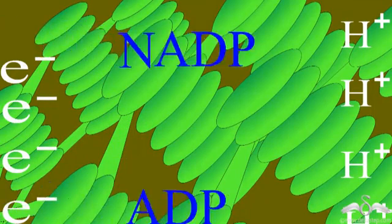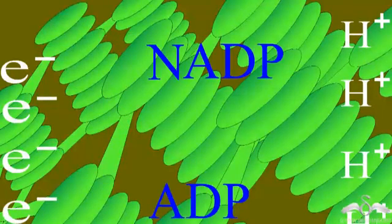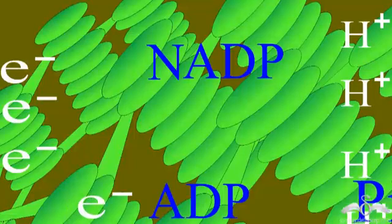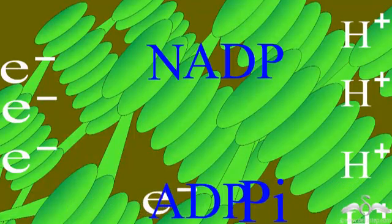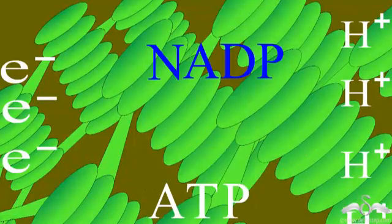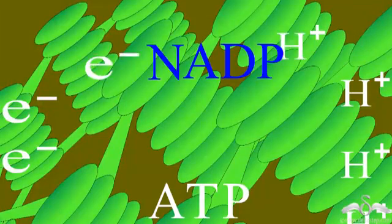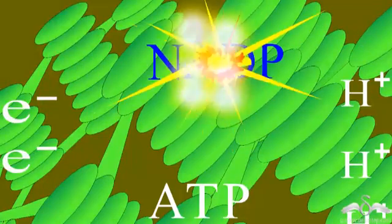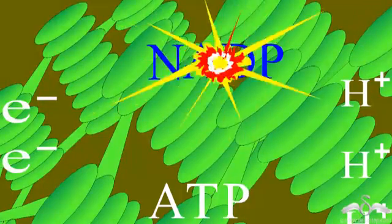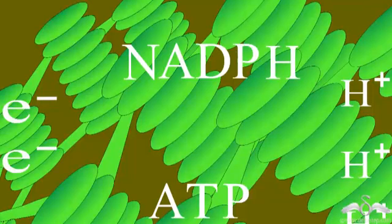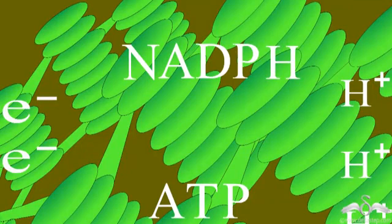Cells have NADP and ADP. ADP combines with electrons and inorganic phosphate to form ATP, and electrons combine with NADP along with the hydrogen ions formed during the photolysis of water to form NADPH, which stores even more energy than ATP.